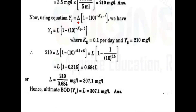Now we solve for the ultimate BOD, L. The formula is: Y5 equals L into 1 minus 10 to the power of negative KD times T. Here T equals 5 days, KD equals 0.1, and Y5 equals 210 mg per litre. Solving for L, we get L equals 307.1 mg per litre, which is the ultimate BOD.